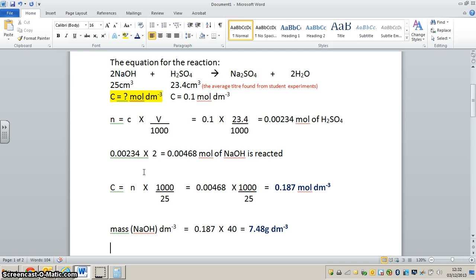The mass of sodium hydroxide per dm³ is equivalent to the number of moles we've got, 0.187 moles, times the molar mass of sodium hydroxide, which is 40. If we multiply that by that, we get 7.48 grams per dm³. So there are 7.48 grams of sodium hydroxide dissolved in one dm³.